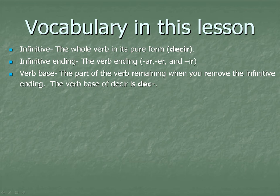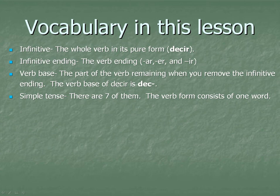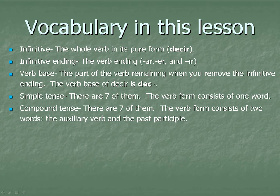Simple tense — there are seven of them. The verb form consists of one word. Compound tense — there are also seven of them. The verb form consists of two words: the auxiliary verb and the past participle.